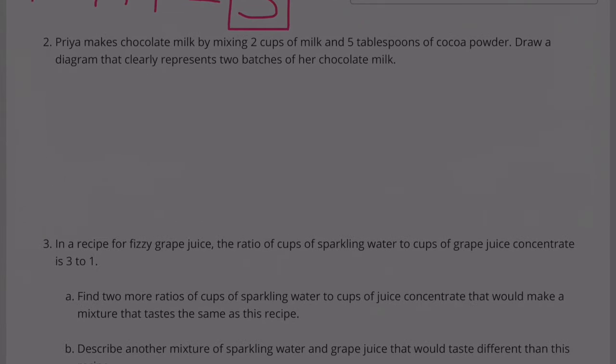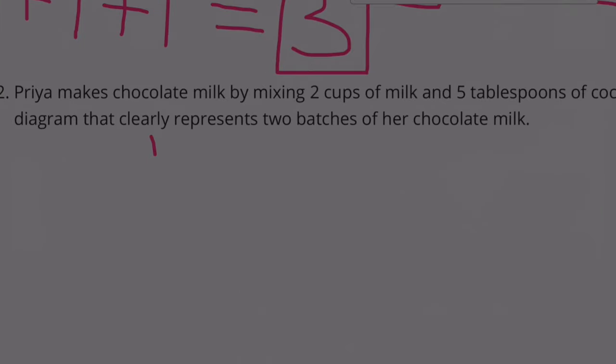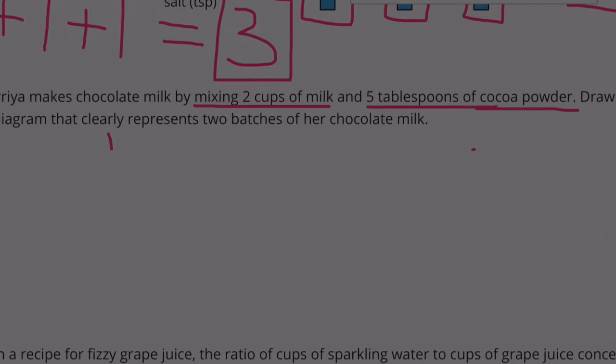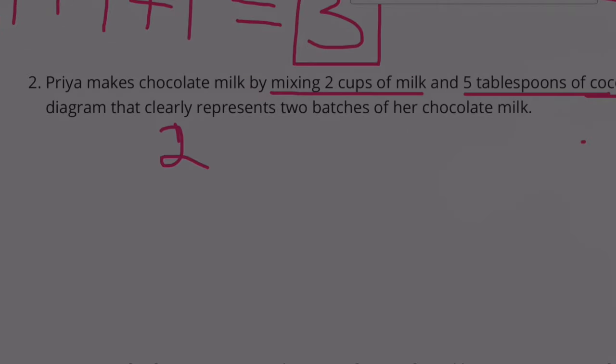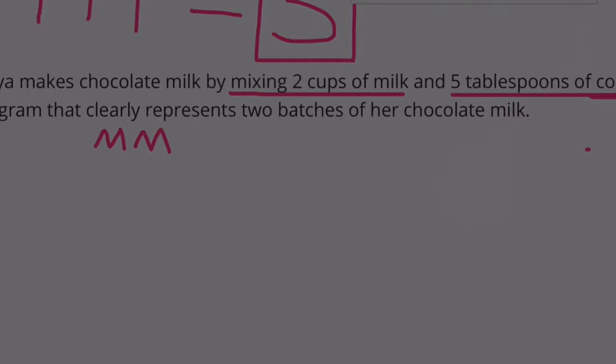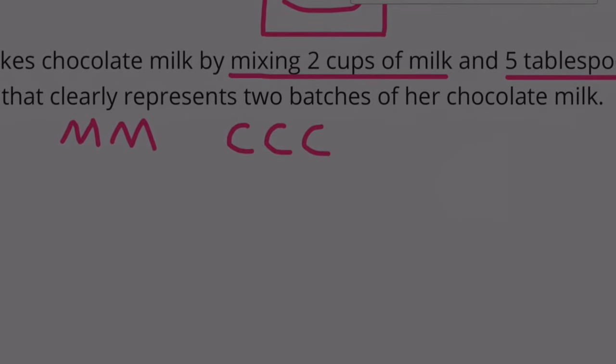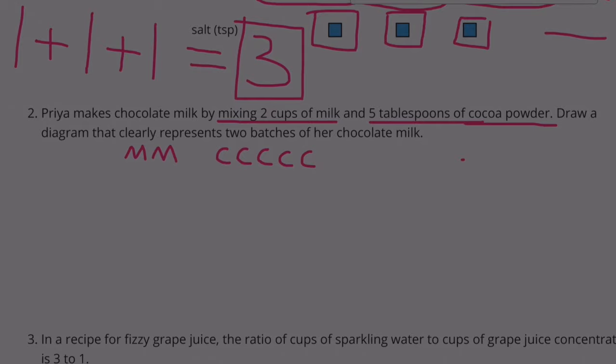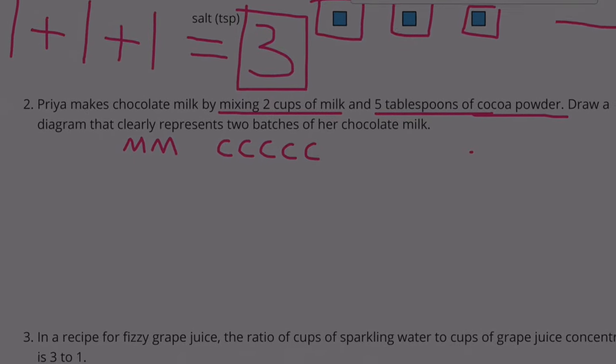Number two: Priya makes chocolate milk by mixing two cups of milk and five tablespoons of cocoa powder. Draw a diagram that clearly represents two batches of her chocolate milk. When she's making one batch, she needs two cups of milk and five tablespoons of cocoa powder. Let's represent the cups of milk by drawing two M's and five teaspoons of cocoa powder by drawing five C's.